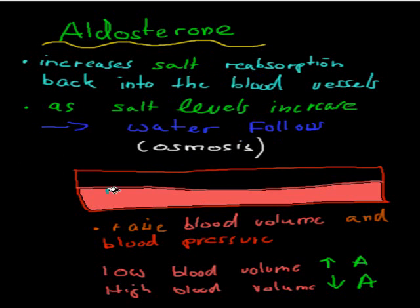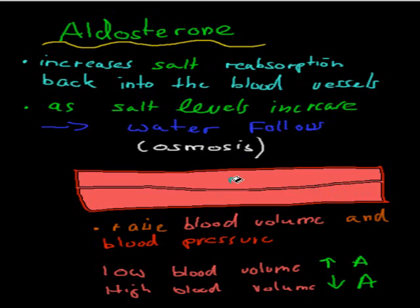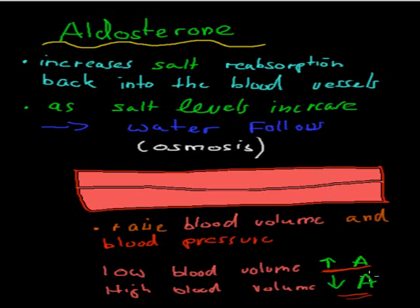You can imagine we've got our blood vessels here with a certain blood volume. If we produce aldosterone, we increase that blood volume because water has followed the salt into our blood. That increases our blood volume and also our blood pressure. So if we have low blood volume or low blood pressure, we will increase our aldosterone production to bring that back up to normal. Whereas if we have too high blood volume, we don't produce aldosterone. Again, that feedback mechanism: too low, increase aldosterone production; too high, decrease aldosterone production.